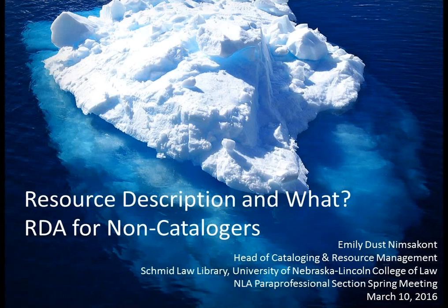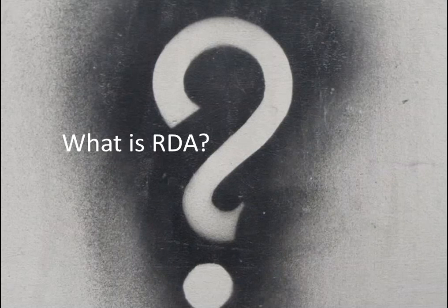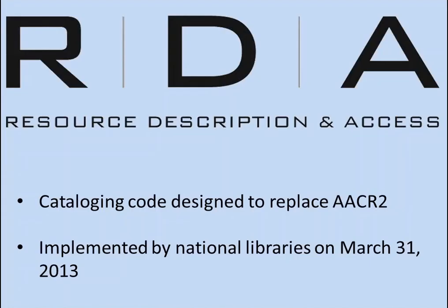This is introducing Resource Description and Access, or RDA for short, which is the new cataloging code — a set of rules that tells catalogers how to create records in your catalog, how to describe the items whether it's books, DVDs, whatever it is, and make it accessible for patrons. It is designed to replace the previous code, Anglo-American Cataloging Rules 2nd Edition, or AACR2. We're moving away from AACR2 and toward RDA.